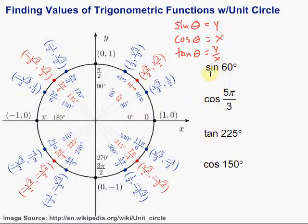So let's start with this first one: the sine of 60 degrees. Let's find 60 degrees right here. Here it is, and there's my point, one-half and the square root of 3 over 2.